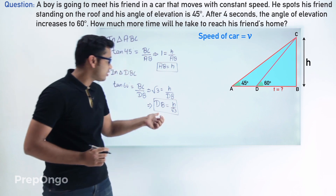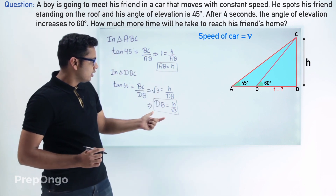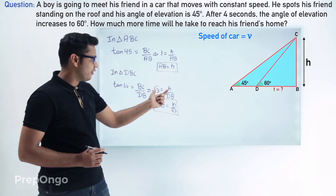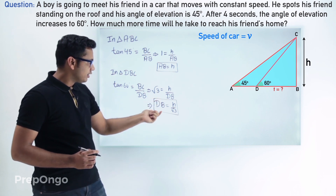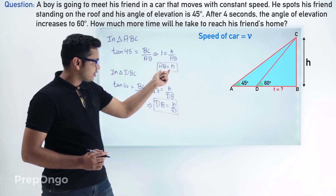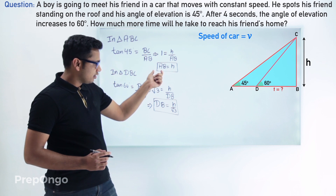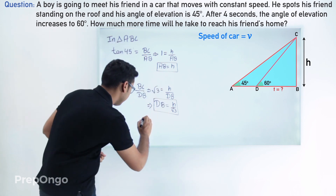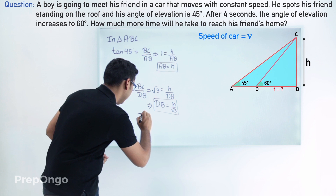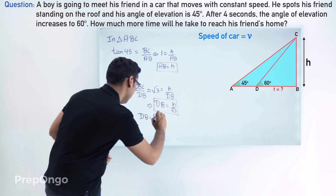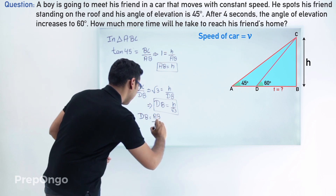From these two relations, since H equals AB, we can find a relation between DB and AB. Substituting H equals AB into the expression for DB, we get DB equals AB upon √3.